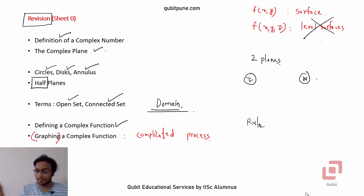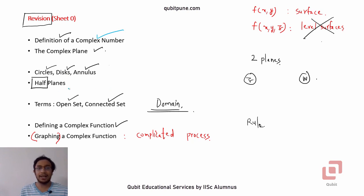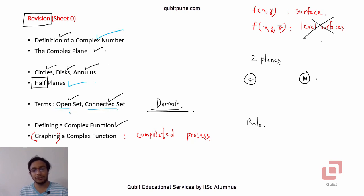In our previous lecture, we had a brief revision of what complex numbers were and why people felt the need to define such numbers. Then we talked about geometrical objects like circles, disks, and half planes — something new — and how we can represent them as inequalities or equations involving complex numbers. We also saw terms such as open set and connected set, and noted that if we have a set which is open, then its complement has to be closed. Any set which is both open as well as connected is known as a domain.